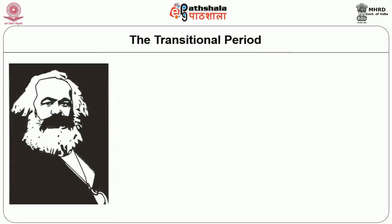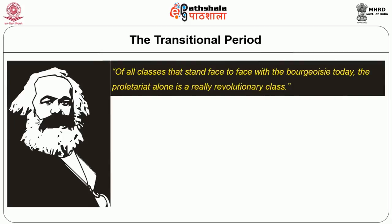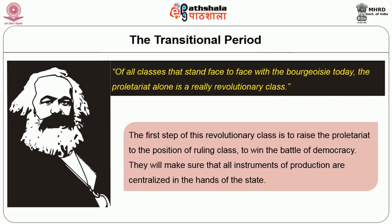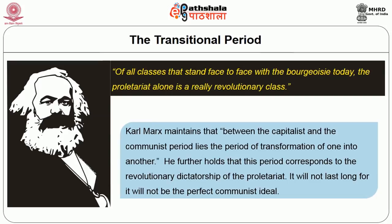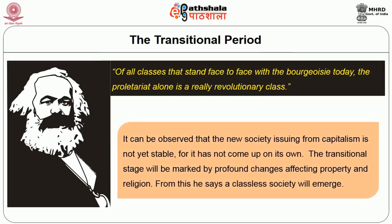The transitional period: Karl Marx in the Communist Manifesto says that of all classes that stand face to face with the bourgeois today, the proletariat alone is the really revolutionary class. The first step is to raise the proletariat to the position of the ruling class and win the battle of democracy, ensuring that all instruments of production are centralized in the hands of the state. Between the capitalist and the communist period lies the period of transformation of one into another, corresponding to the revolutionary dictatorship of the proletariat. It will not last long for it will not be the perfect communist ideal. The transitional stage will be marked by profound changes affecting property and religion, from which a classless society should emerge.